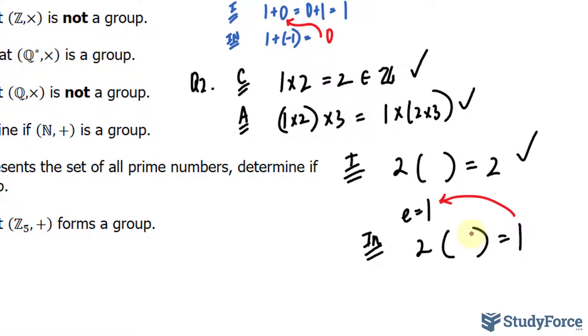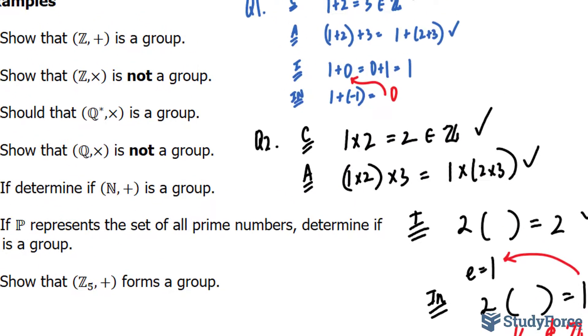The only thing that will lead us back to 1 is if we multiply by 1/2. Unfortunately, 1/2 is not an element of the integers. And this is why (Z, ×) is not a group.